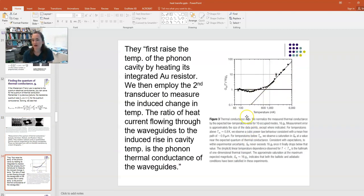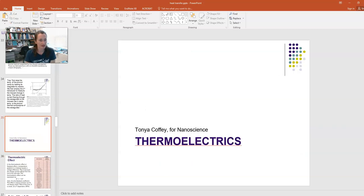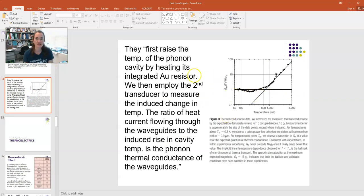This is a plot from their work here. They first raised the temperature of the phonon cavity by heating its integrated gold resistor, and then they employed the second transducer to measure the induced change in the temperature. The ratio of the heat current flowing through the waveguides to the induced rise in the cavity temperature is the phonon thermal conductance of the waveguides, and that's plotted here. You can see that it starts off behaving like a bulk, and then it plateaus off when it reaches that quantum level. In so doing, they measured the quantum of thermal conductance. Pretty cool, right? This quantum of thermal conductance has been shown theoretically and experimentally to be true, and so you can limit the amount of thermal energy that's transferred just like you have the quantum of electrical conductance, you have the quantum of thermal conductance.